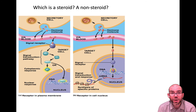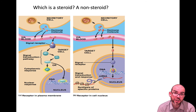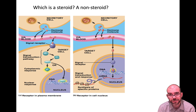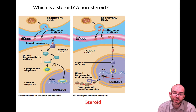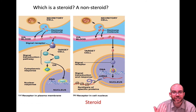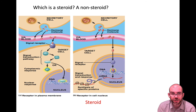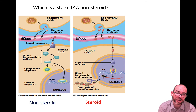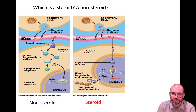Here's a diagram showing both. Would you be able to identify which one is showing a steroid and which one is showing a non-steroid? Hopefully you notice the one on the right is a steroid — the ligand, the signaling molecule, went directly through the cell membrane. Whereas the one on the left, the ligand attached to a receptor on the surface, so that is a non-steroid hormone.